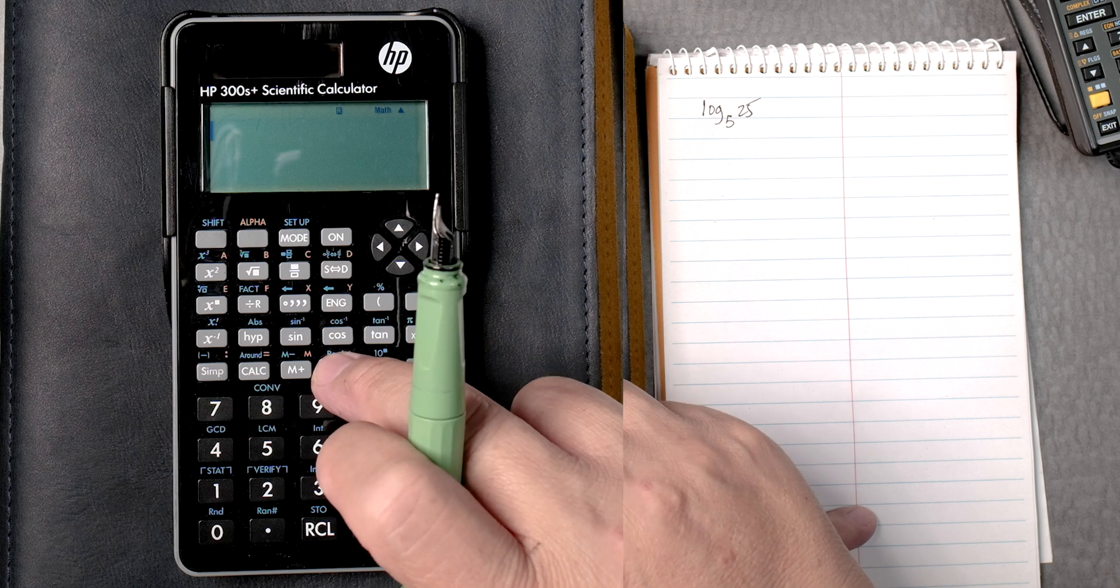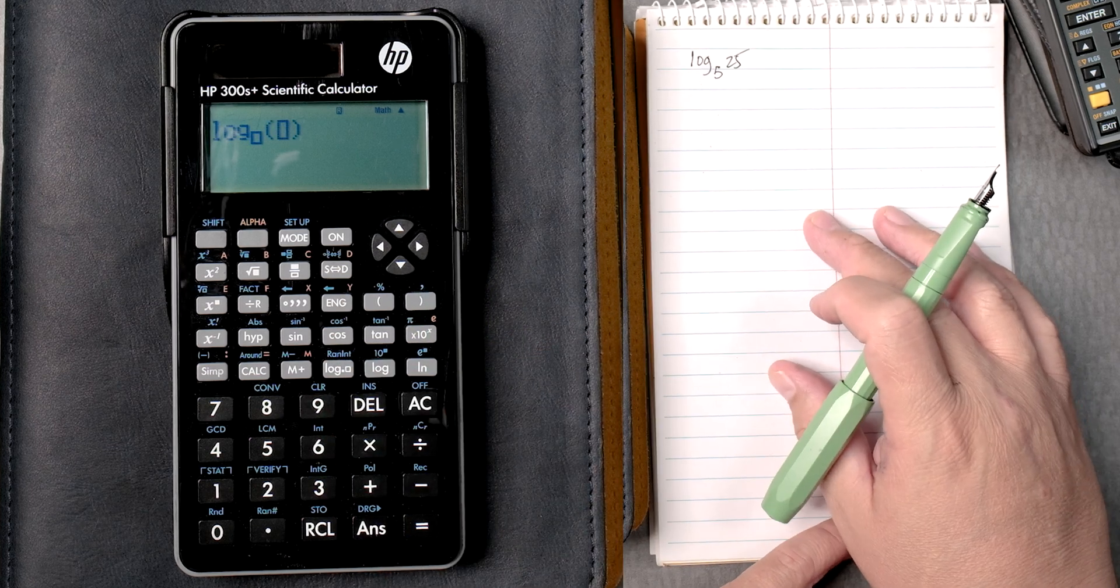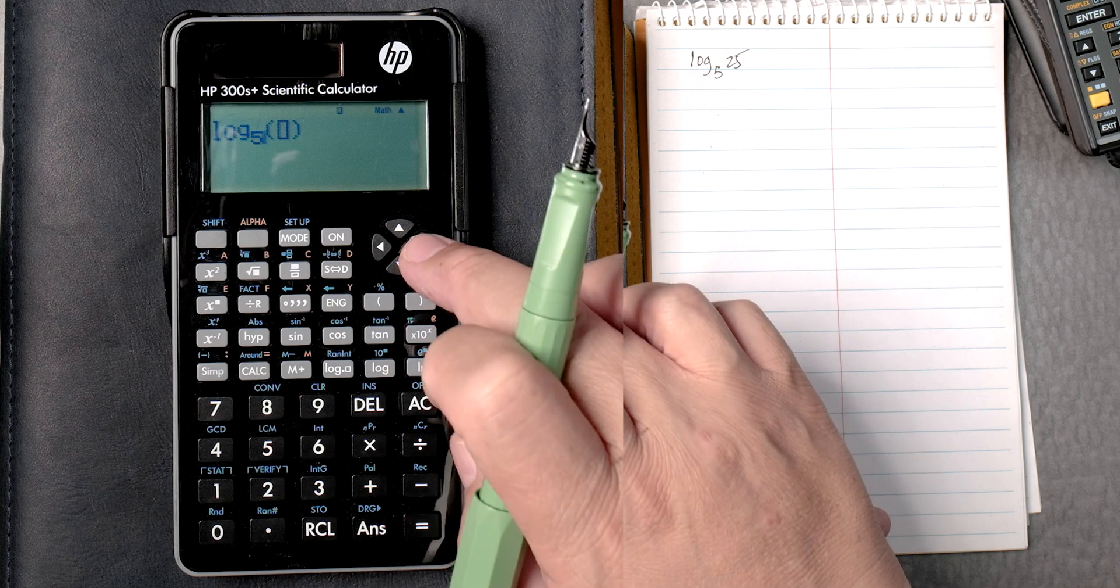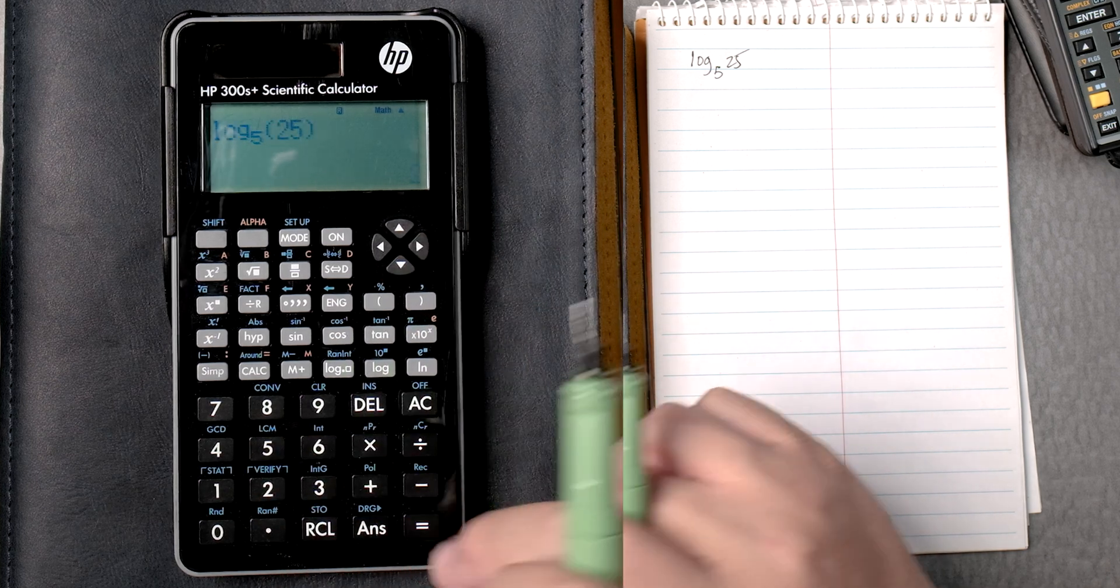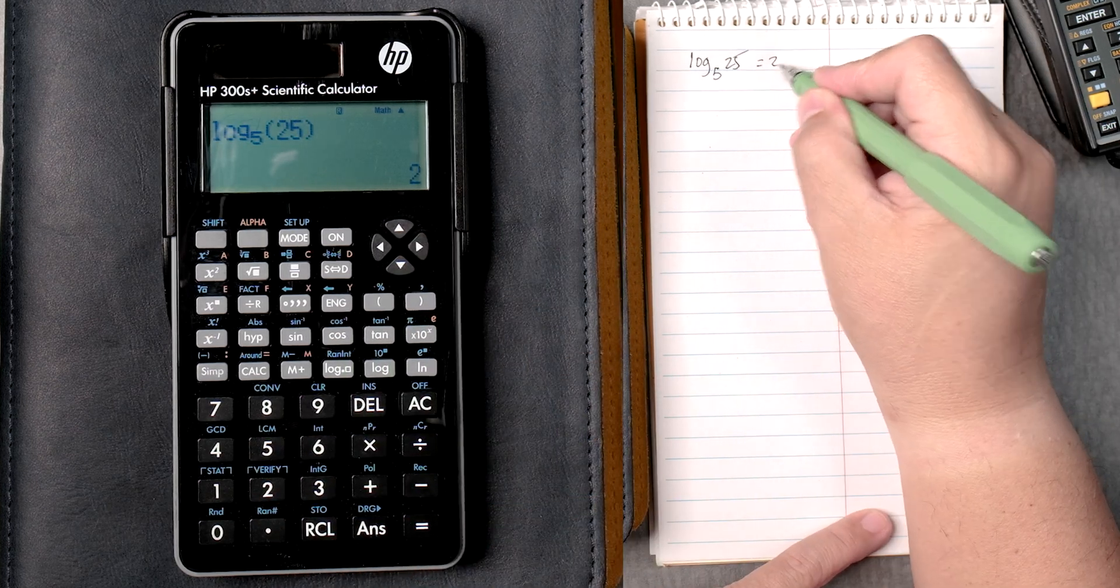You press this button right here, and it gives you, what's the base? 5, move it over, 25 equals 2. Straightforward, isn't it?